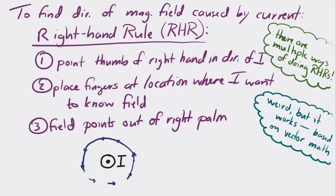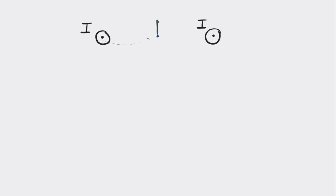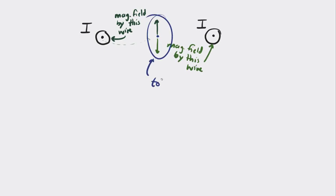The last thing we need to say about magnetic fields is that they are vectors. If you want to find the total magnetic field at a location, you take the vector sum of all the individual fields. For example, if you have two wires directed out of the page next to each other, and you want to find the magnetic field at a point halfway between them, you find the magnetic field from each wire at that location and add them as vectors. If the two currents are identical and flowing out of the page, the magnetic field halfway between them would be zero.